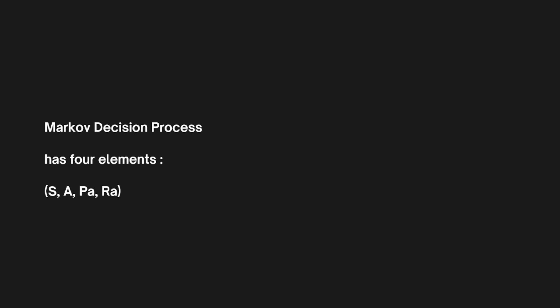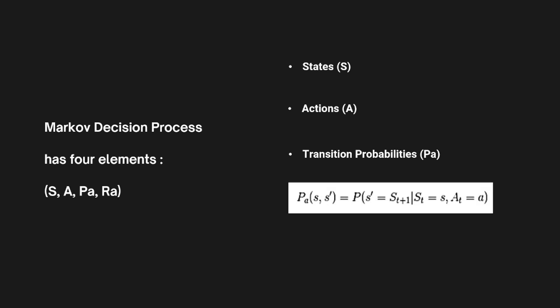Markov Decision Processes are defined by four key components. First, States — this represents the current situation the agent is in. For example, in a maze, a state might be your current location. Second, Actions — these are the possible choices the agent can make at each state; in the maze, this could be moving up, down, left, or right. Third, Transition Probabilities — this tells us the probability of moving from one state to another after taking a specific action. If you're in state S and you take action A, what's the probability you'll end up in state S'? Fourth, Rewards — this is the feedback the agent gets after taking an action, like earning points or losing health. These four elements define how the agent interacts with its world.